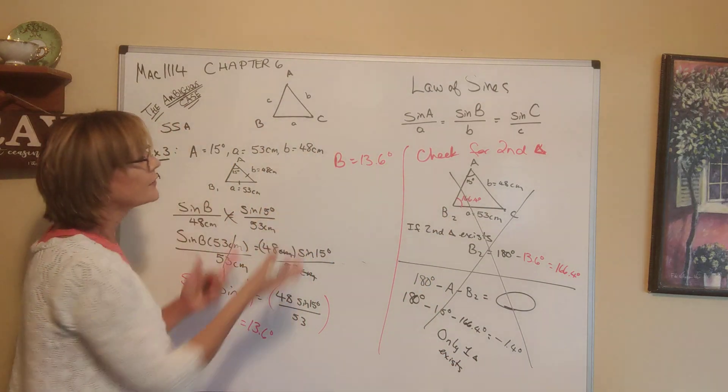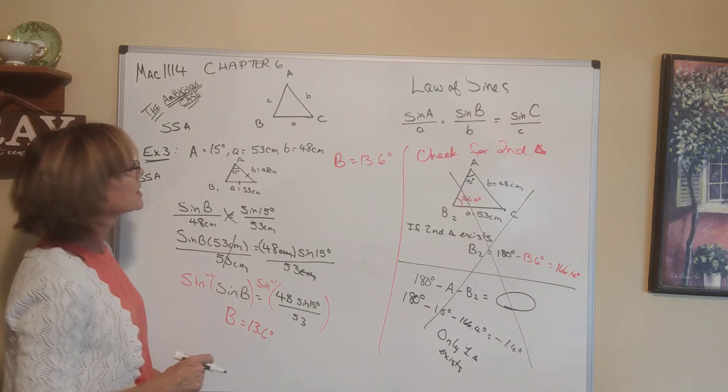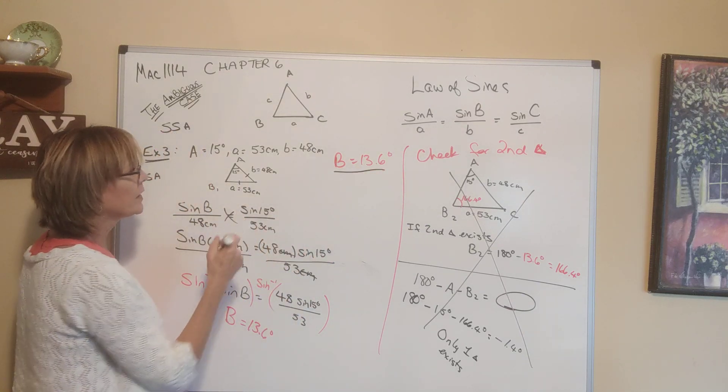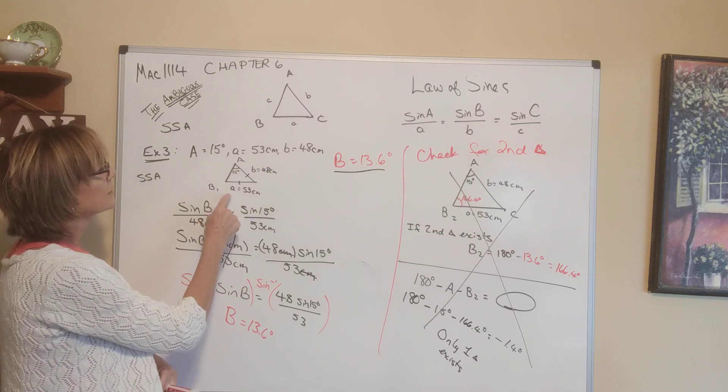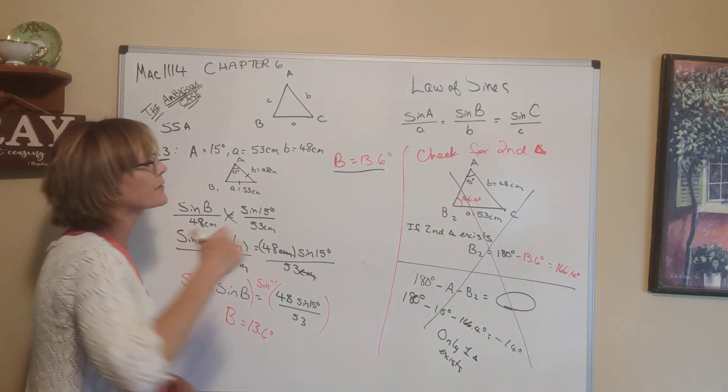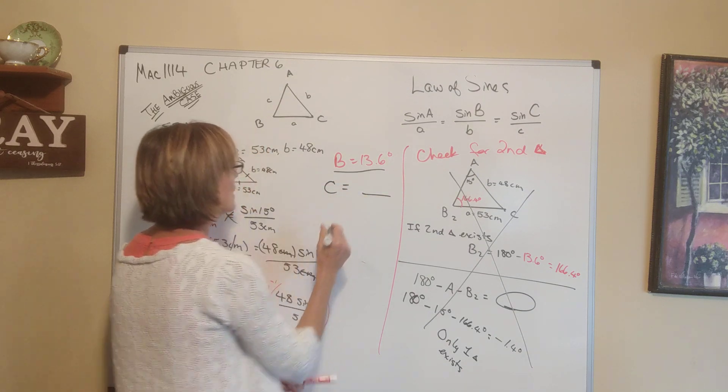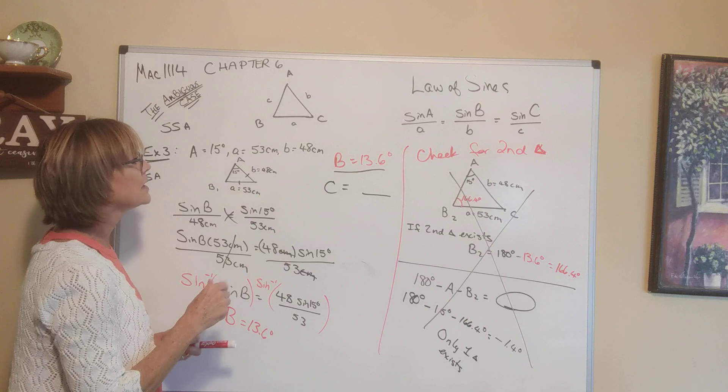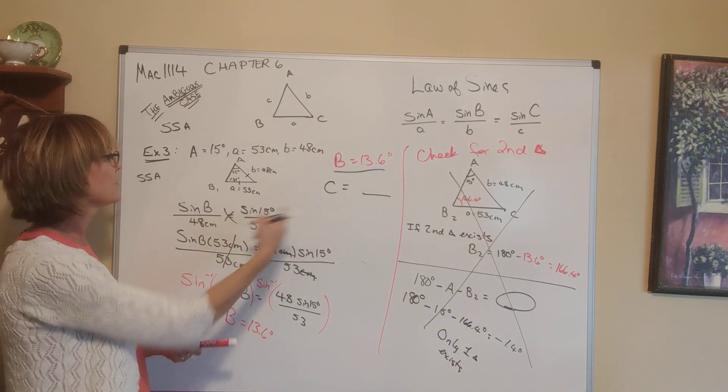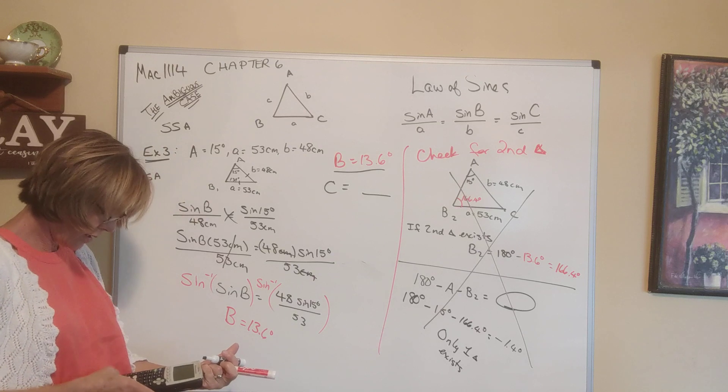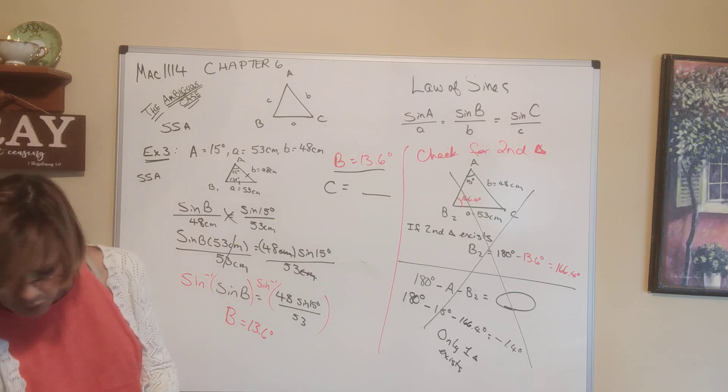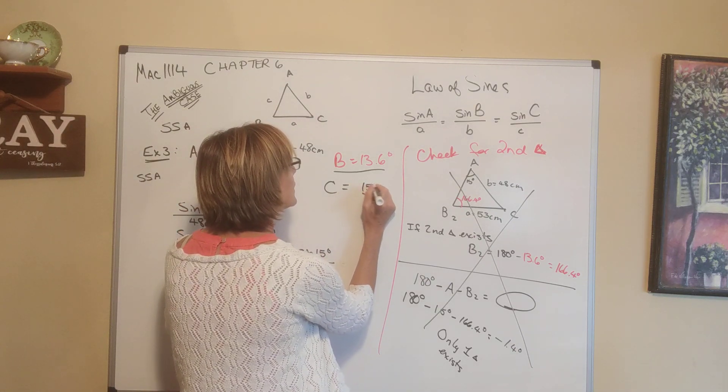All right, so then let's go over here and finish the work that we have to do to figure out what's the only thing we have left to do. We needed to discover what angle B was. So we know B is this. We also need to know, we have little a, little b, angle a, angle b. We can find angle C real easy by subtracting that from 180. C is equal to whatever. So let's see. 180 degrees minus 13.6 minus 15 will give us angle C. So what is that? 180 minus 15 minus 13.6 is 151.4. This is 151.4 degrees.